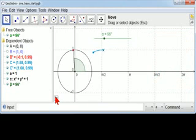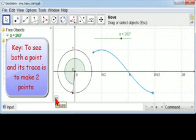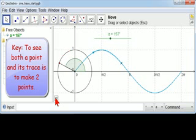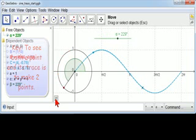And now we can see the point and the trace. So that's the key to being able to see the point and its trace, is to actually make two points. One big with the trace off, and the other small with the trace on.